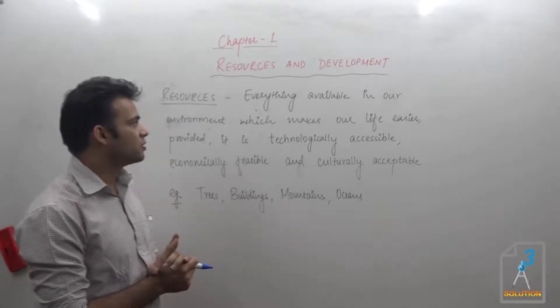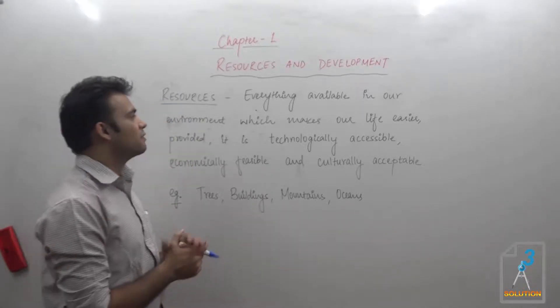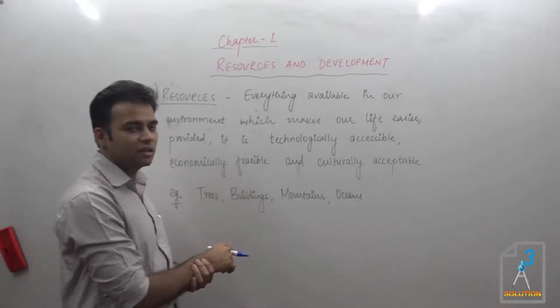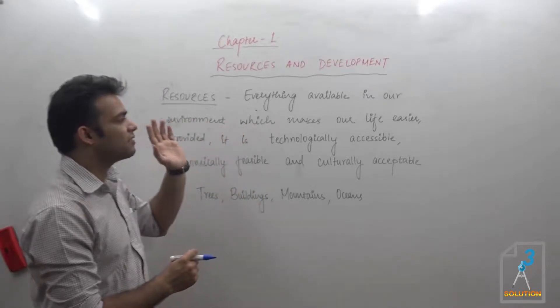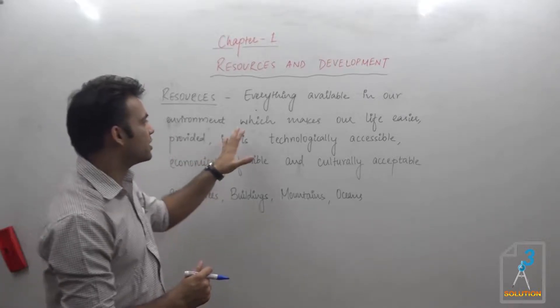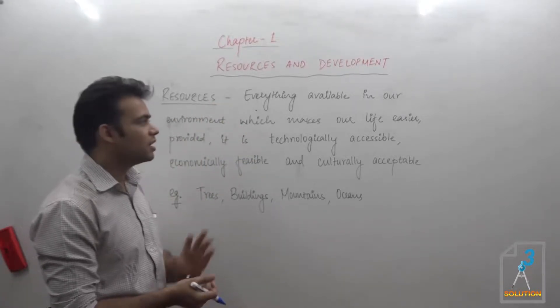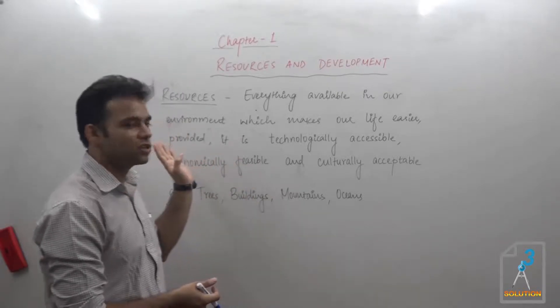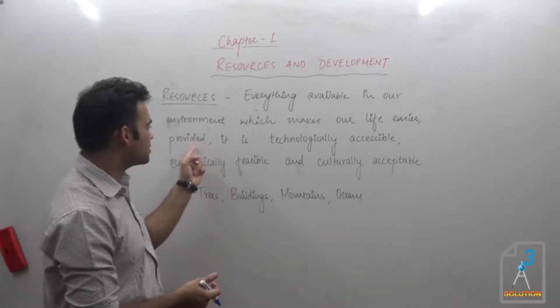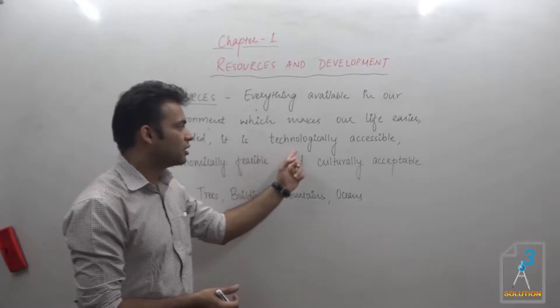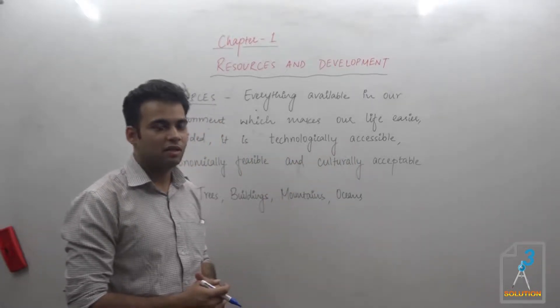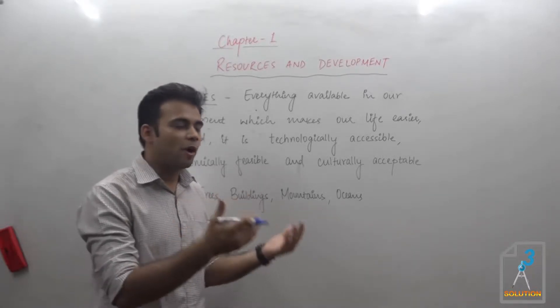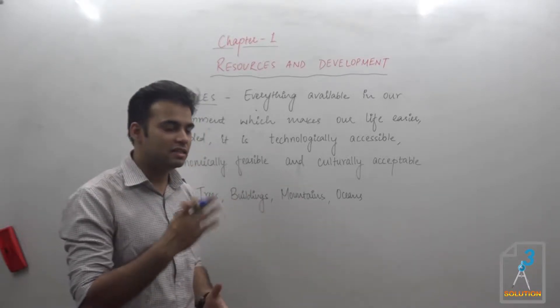Here I have written the definition for resources. Everything available in our environment which makes our life easier—whatever things that make our life easier are known as resources. I have applied three conditions on the definition of resources. It should be technologically accessible, meaning you should have certain machines or equipment so that you can obtain it from nature easily.